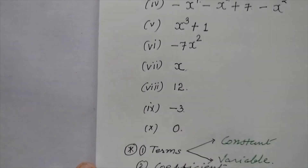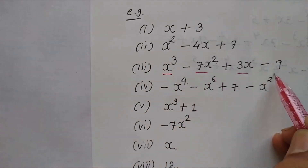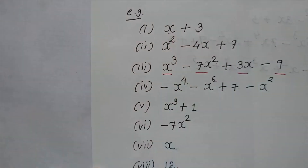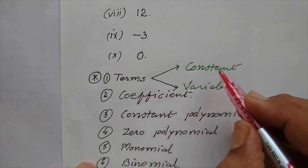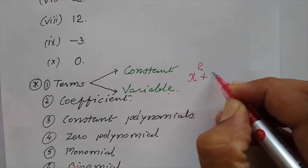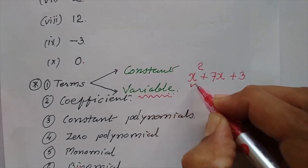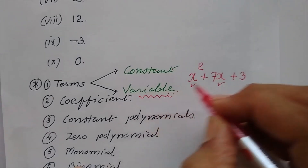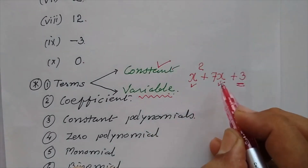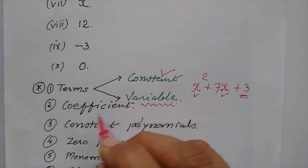First one is terms, children. This is known as first term, second term, third term, fourth term. Means in this polynomial, four terms are there. In this polynomial, two terms are there — first one and second. Now children, when we talk about terms, we must know two types of words: constant and variable. Suppose I write this polynomial, x squared plus 7x plus 3. Let us understand this word variable. So x and this x, they are known as variables.